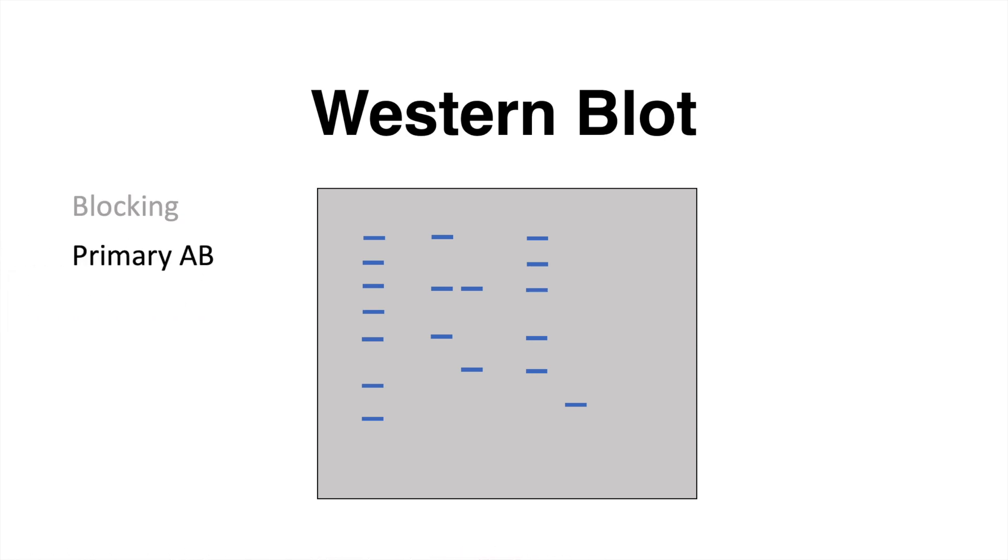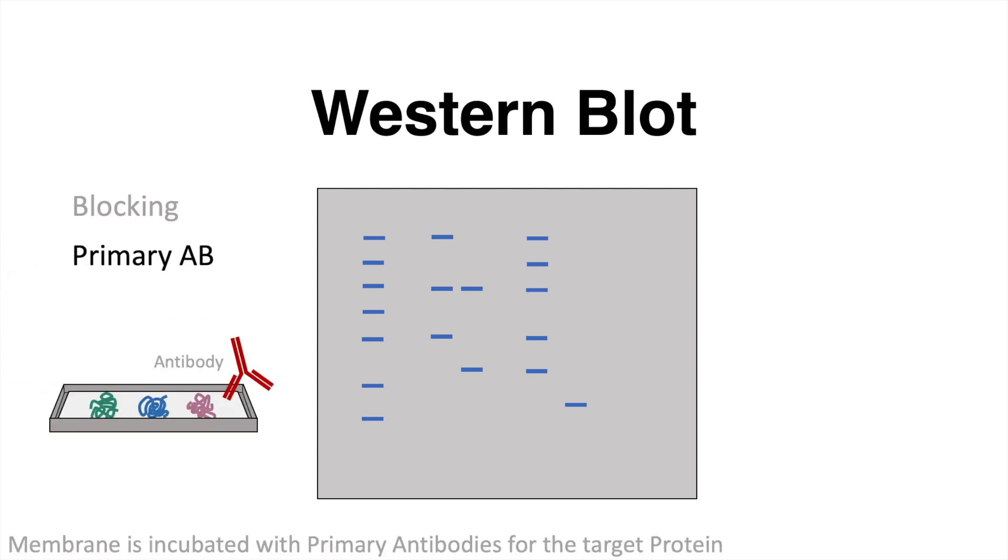After blocking, the membrane can be incubated with the primary antibody. This antibody should be selected to only bind to the protein of interest. After incubation with this primary antibody, a washing step will wash away the unbound antibodies, while not removing the antibodies that are bound to the protein of interest.